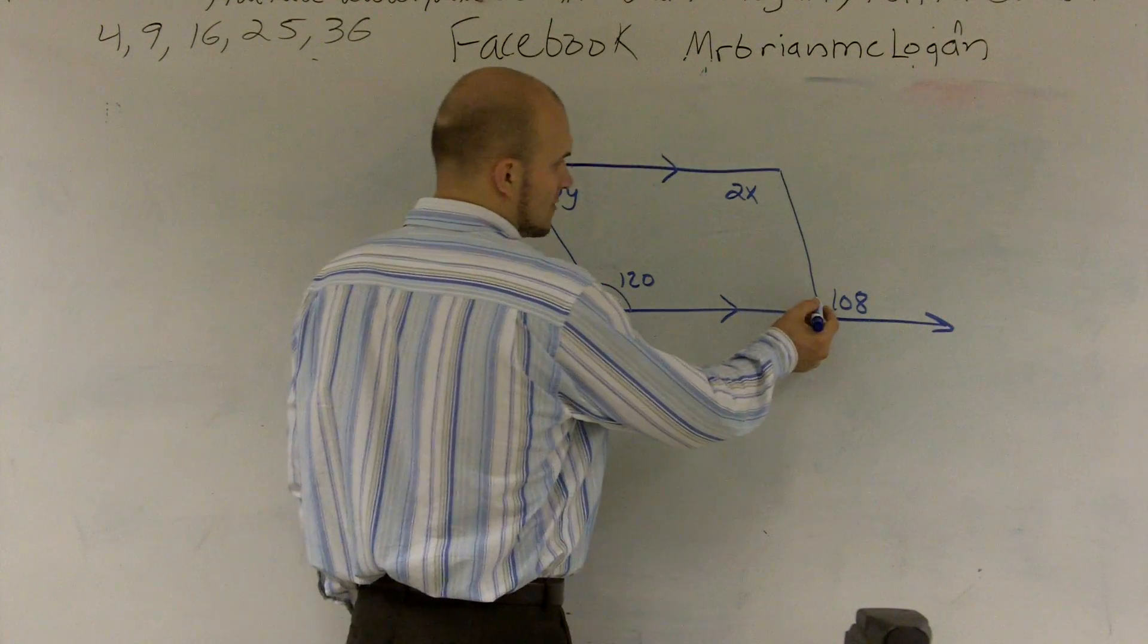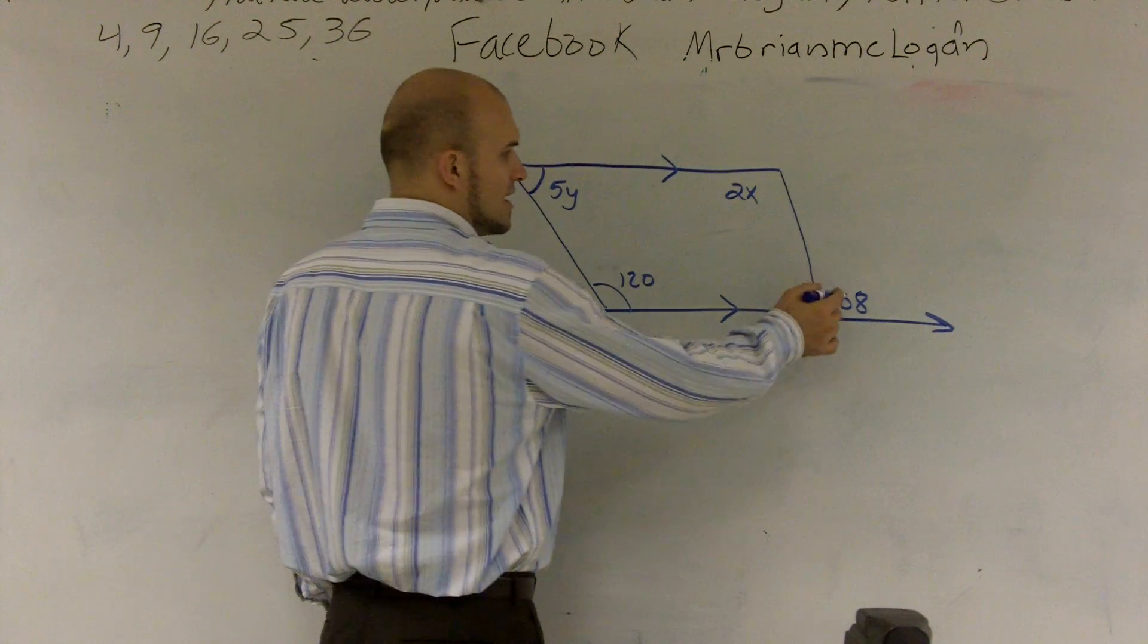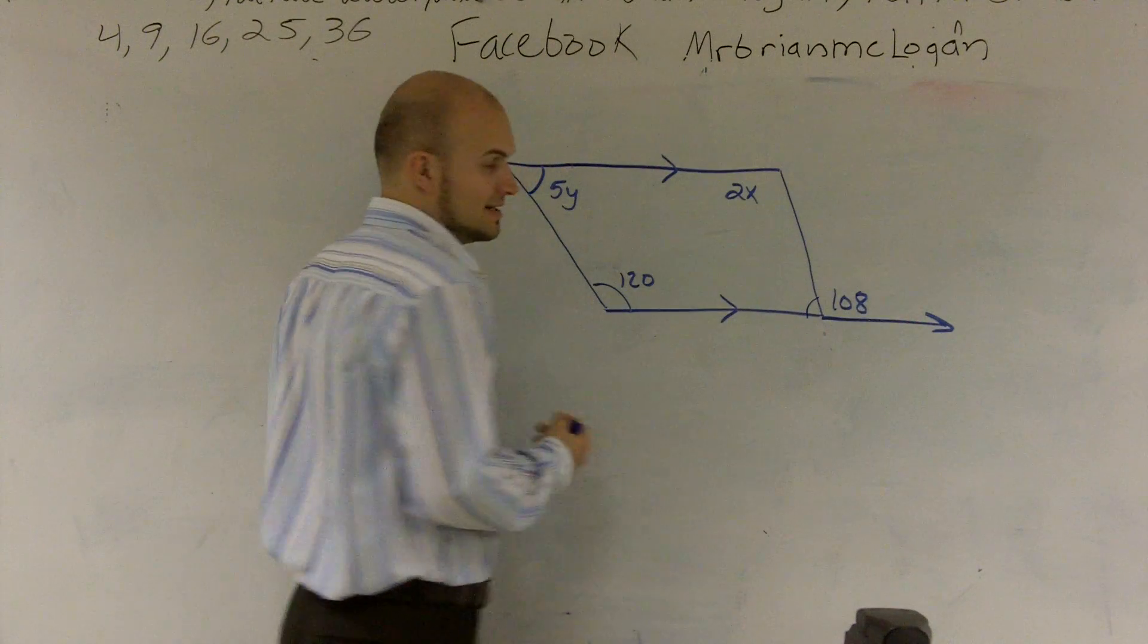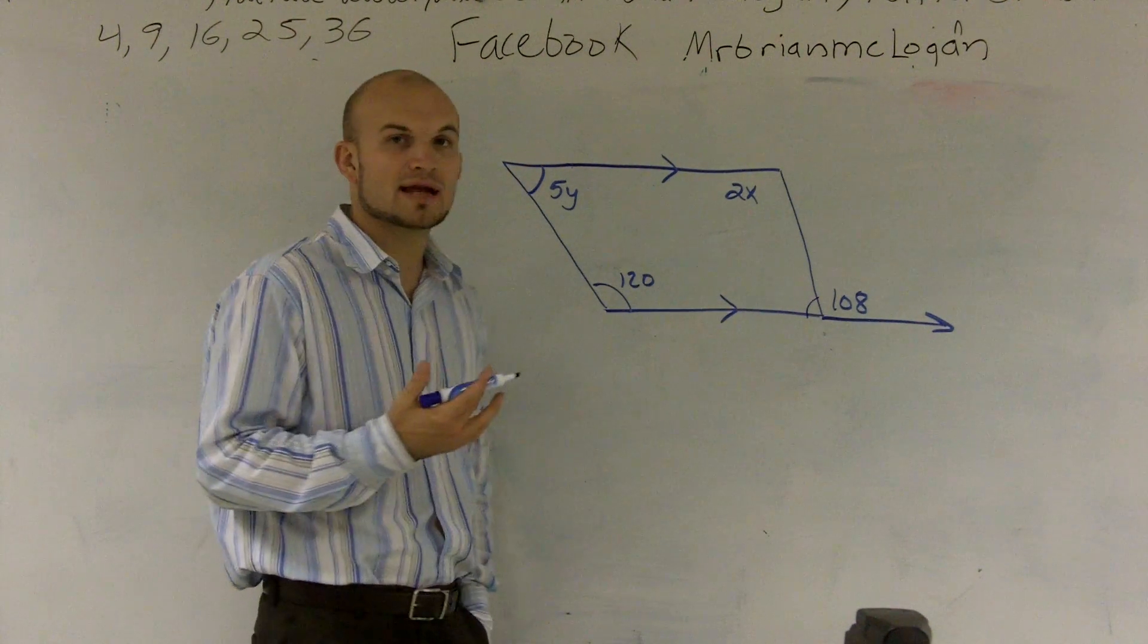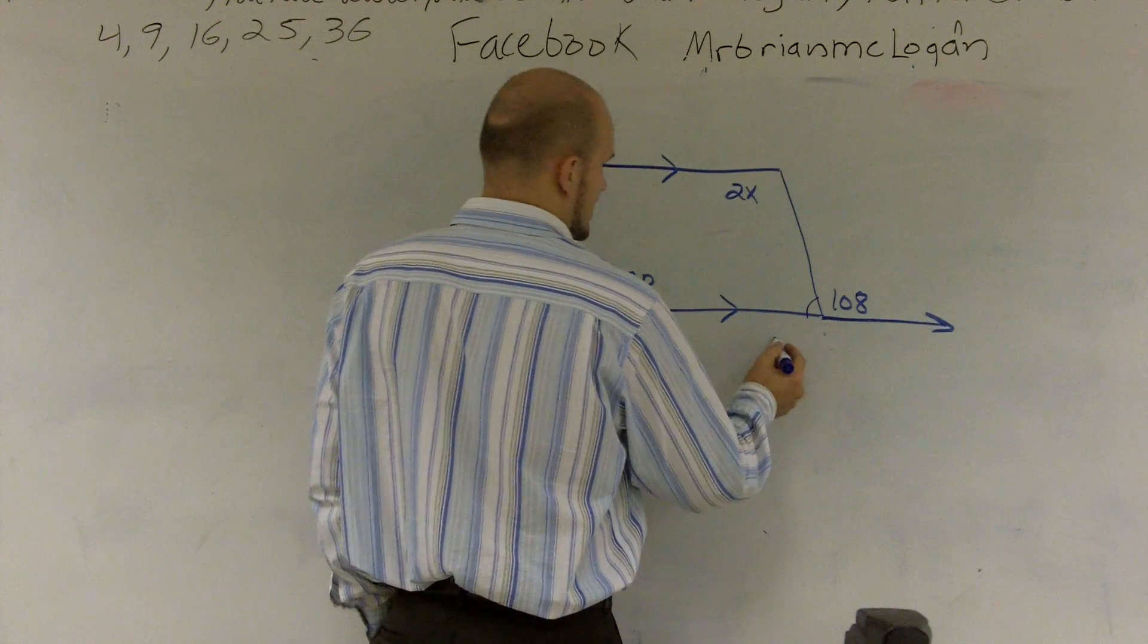First thing I'm going to do is I need to figure out what this angle is. Well, I know that 108 and this angle make up a straight line. And since they make up a straight line, we call them supplementary angles. And supplementary angles add to 180.